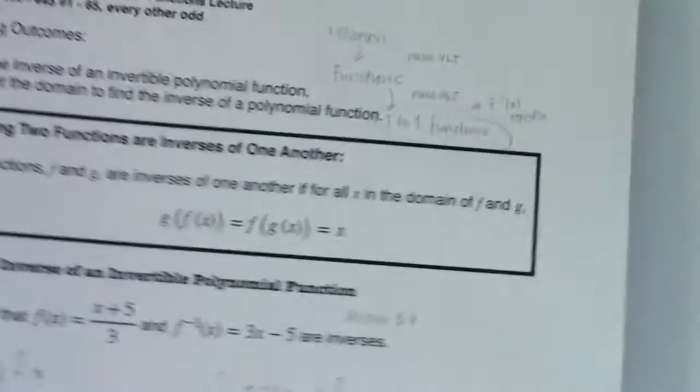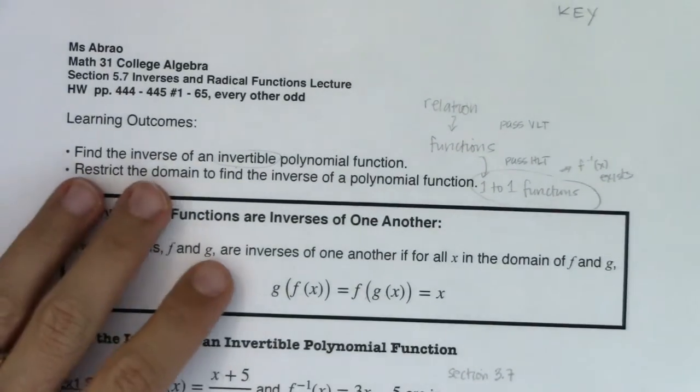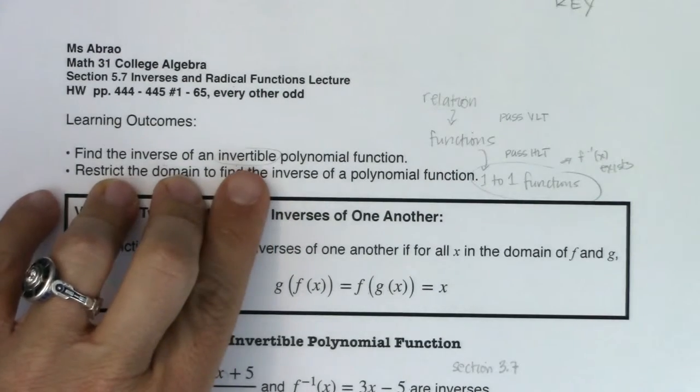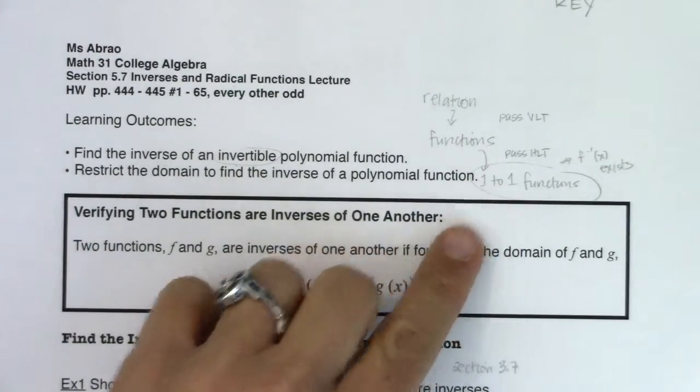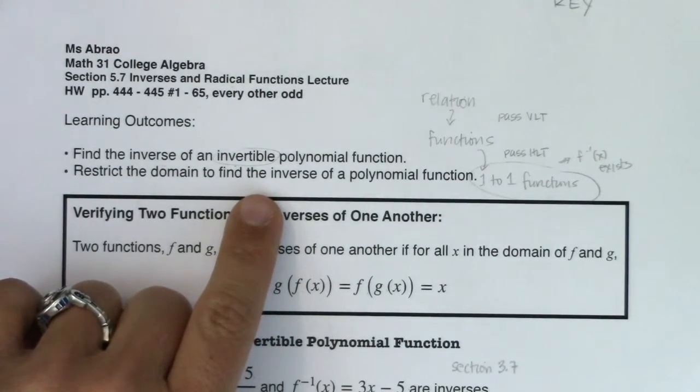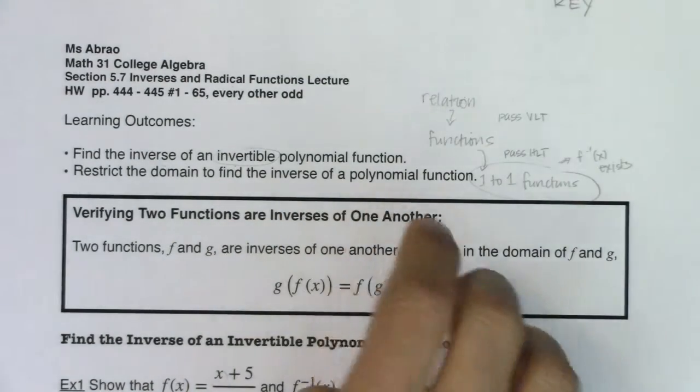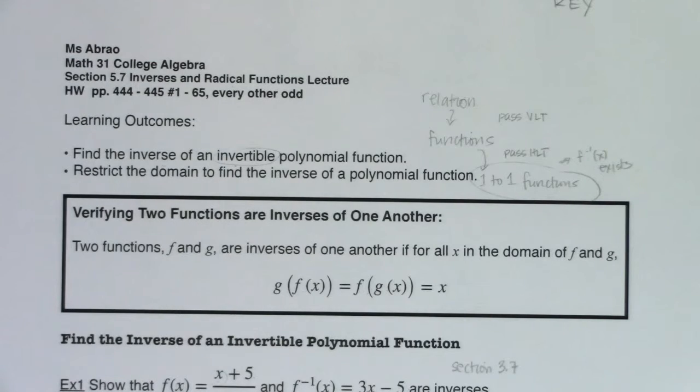Alright, so just to recap what we did in this section, right? We're able to find inverses of polynomial functions when they're invertible, meaning that they're one-to-one. And then we've practiced a little bit more on how to restrict the domain of a function, whether it's polynomial or radical or rational. But once we restrict that domain, make it one-to-one, then we can go find the inverse.